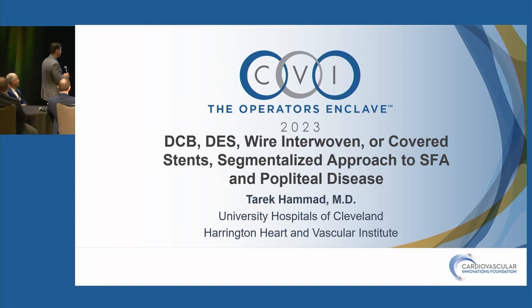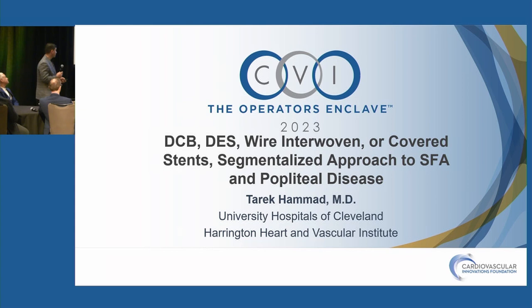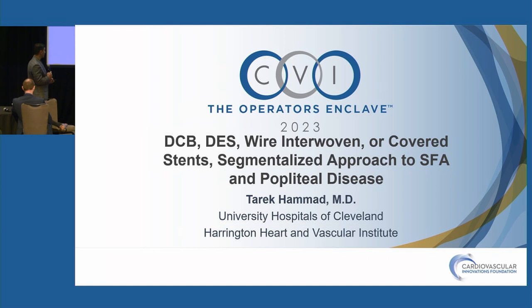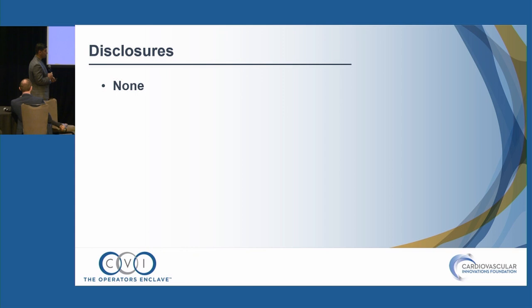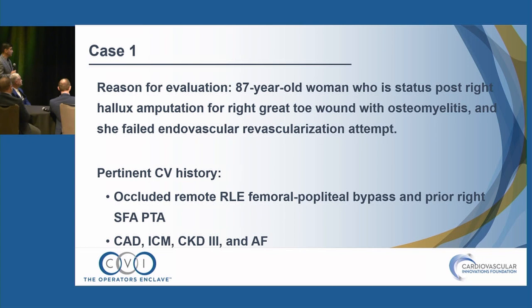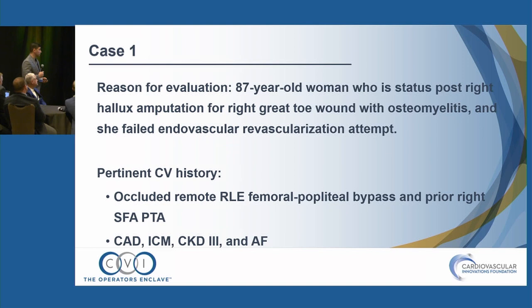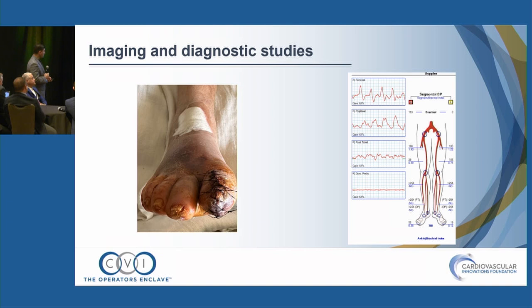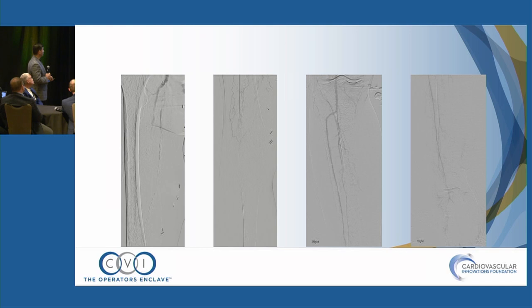Dr. Hamad presents on a segmentalized approach to femoral popliteal disease, mainly about DCB and stents. First case: an 87-year-old lady who underwent amputation of her right hallux for a wound and osteomyelitis. The podiatrist was concerned there was barely any bleeding, so she underwent a revascularization attempt that failed with a residual extensive dissection. She had a prior fempop bypass and a prior SFA PTA attempt. ABI waveform shows damped signal from popliteal and flat at digit level. The angiogram shows residual extensive dissection in the SFA with two-vessel runoff but not much flow to the foot.